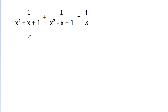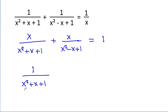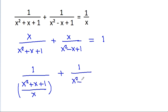If we multiply both sides by x, then we will get x/(x² + x + 1) + x/(x² - x + 1) = 1.